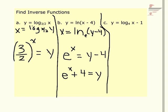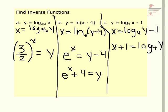Last but not least, part c: I have y equals log base 4 of x minus 1. Again, I switch x and y. Notice the minus 1 is not a part of the log — I have log base 4 of y, and then minus 1, which is not part of my log. So, before I put it into exponential form, I have to isolate the log. I need to add that 1 over to the other side. That's a critical piece of this problem — noting the difference from part b, where the minus 4 was a part of the natural log. Here, the minus 1 is not part of the log. Then, I'm stuck in logarithmic form, so I put it in exponential form: the base of my log is 4, it equals x plus 1 so that becomes my exponent, and I'm taking the log of y so that becomes what it equals — and it's solved for y.